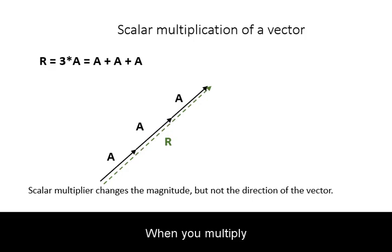When you multiply your vector by a scalar, you are not changing its direction, only its magnitude. In this example, multiplying the vector A by 3 merely lengthens its magnitude, but the direction remains the same.